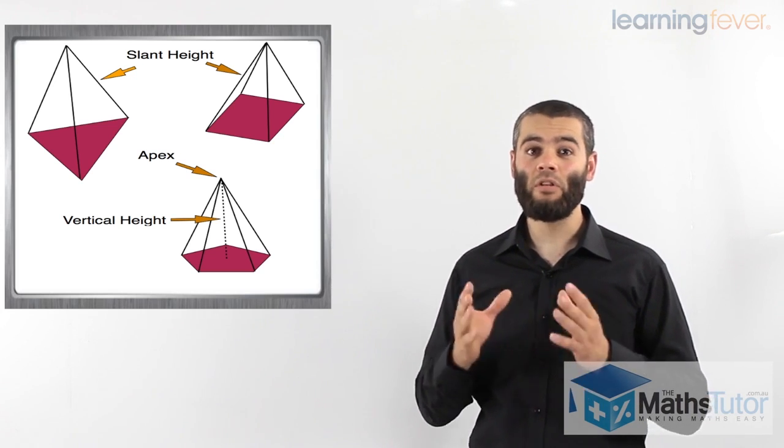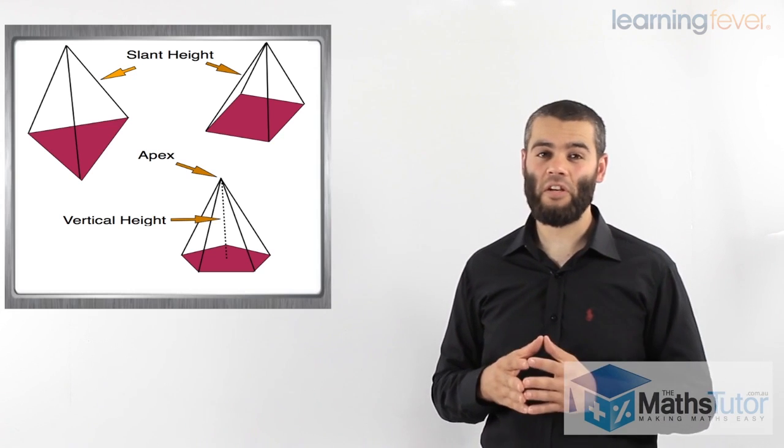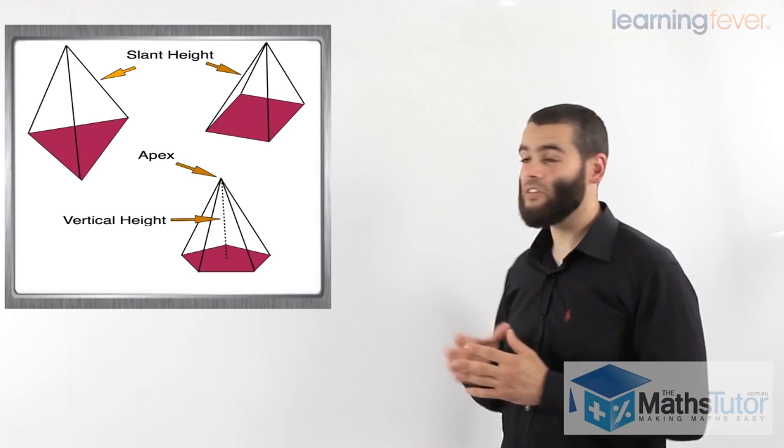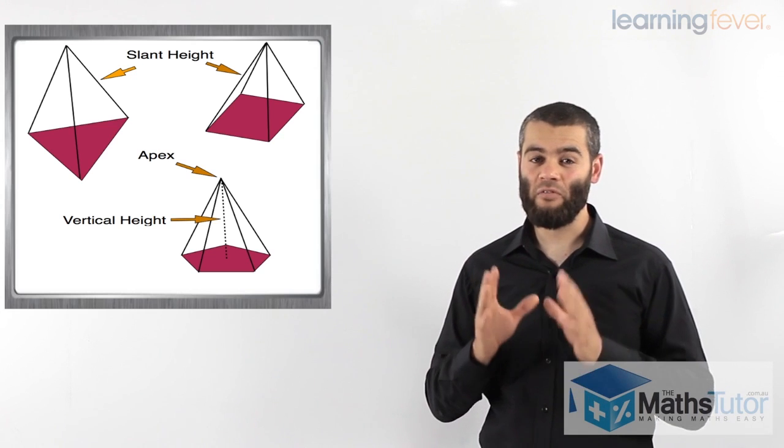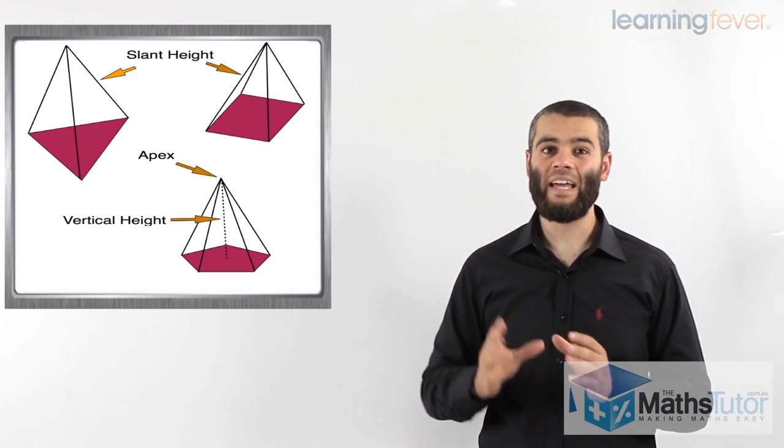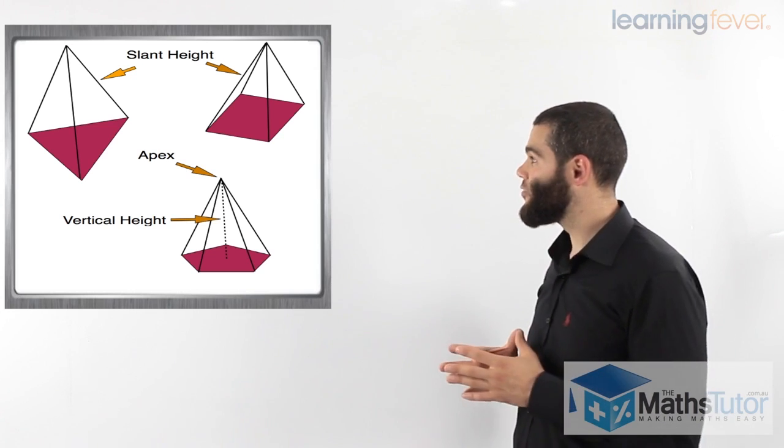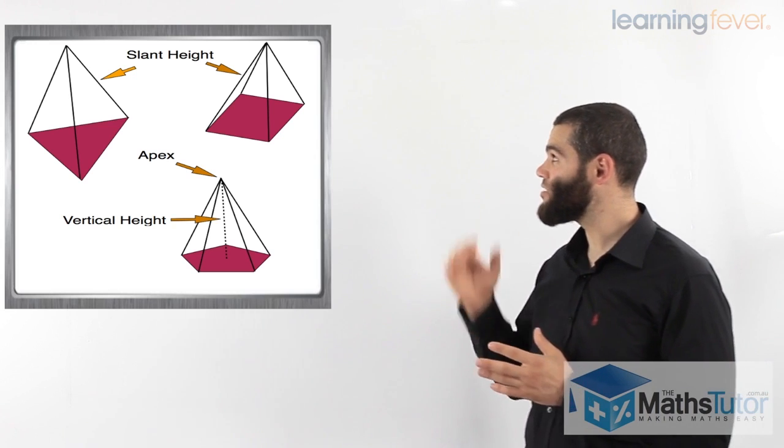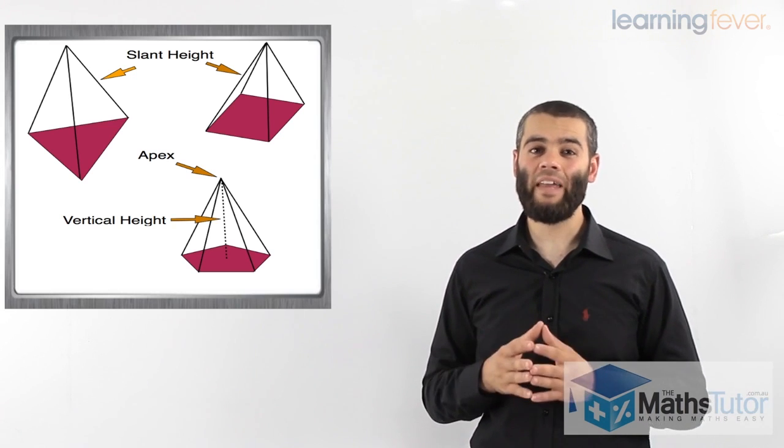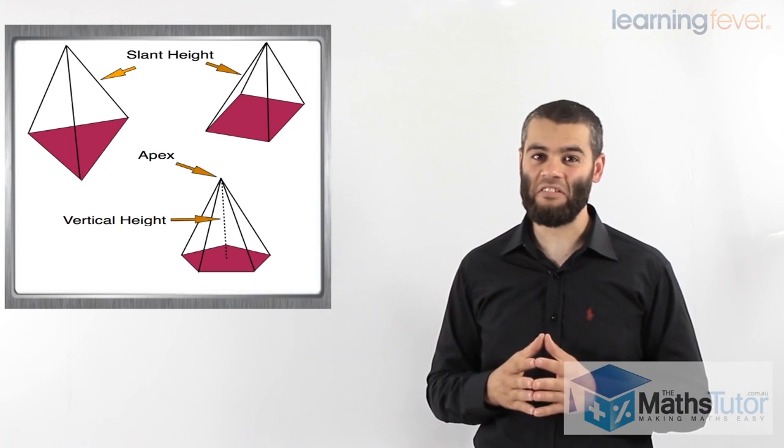Later on, we are going to be using them to work out the surface area of pyramids and also the volume of pyramids. And it is very important to distinguish between the slant height and the vertical height. Now, we see as well, pyramids have faces and pyramids are named depending on their base.